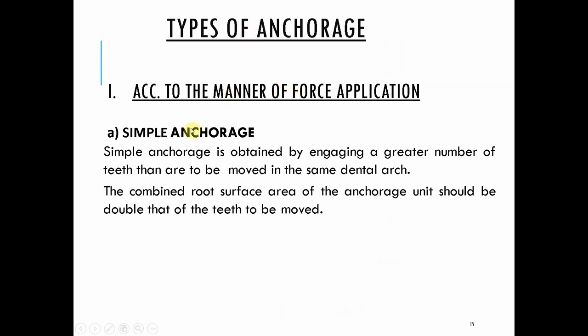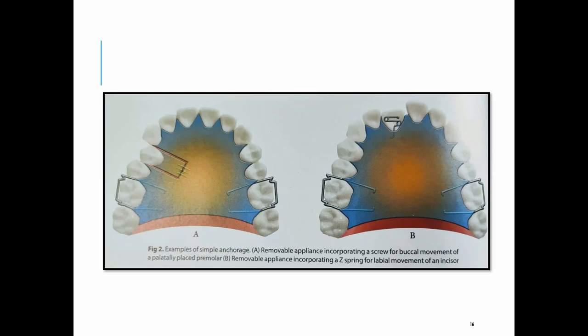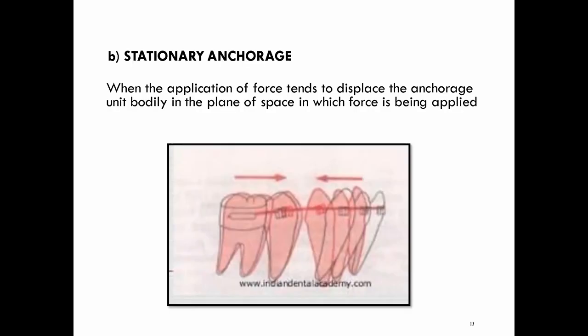Simple anchorage is obtained by engaging a greater number of teeth than are to be moved in the same dental arch — moving a single tooth using a number of other teeth. The combined root surface area of the anchorage unit should be double that of the teeth to be moved. An example is a screw to buccally move a palatally placed tooth, with the remaining teeth acting as anchorage via clasps and a base plate.